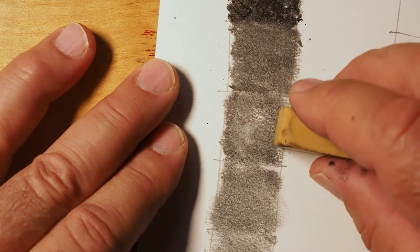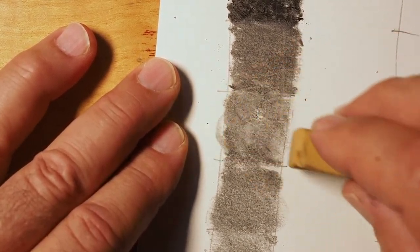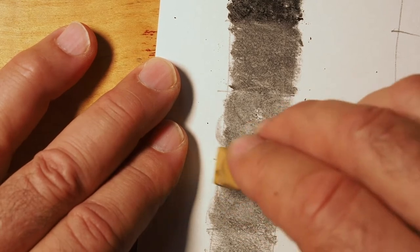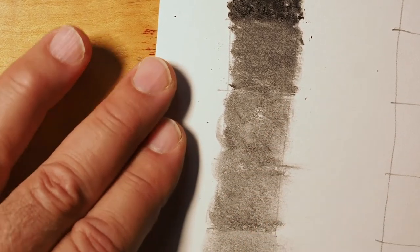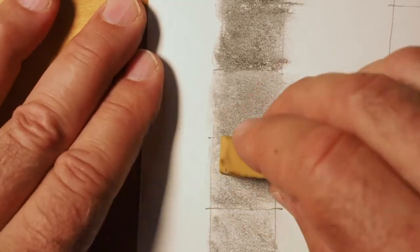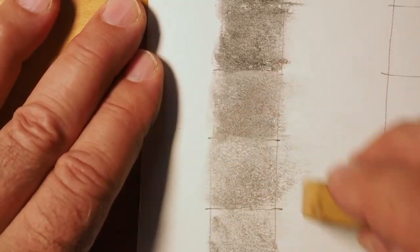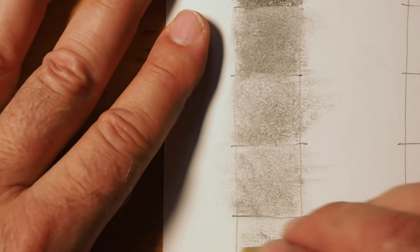I've done all of this by adding value, but you can also draw by removing value. So here I'm experimenting with an eraser to see how it takes the vine charcoal back off the paper, as well as how it will smudge it differently than my finger.